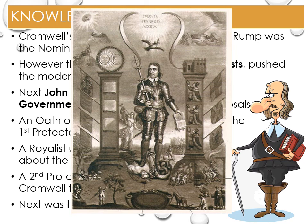Whether or not the Humble Petition could have created a constitutional monarchy is a matter of debate. In September 1658, Cromwell died, and January 1659 saw the brief third Protectorate Parliament under Richard Cromwell, Oliver's son. A brief conflict between the armies of General Monk and Lambert saw Monk march into London, replace the third Protectorate Parliament with the remaining members of the Rump and Long Parliaments, and secure the restoration of the monarchy in 1660. Britain's experiment in republicanism was over.